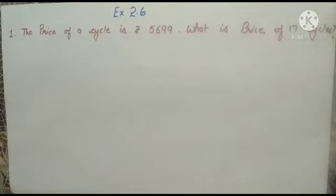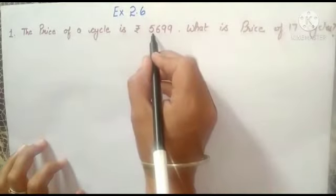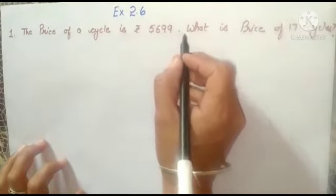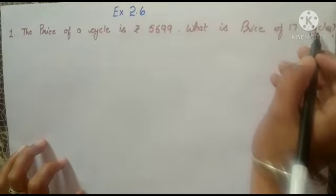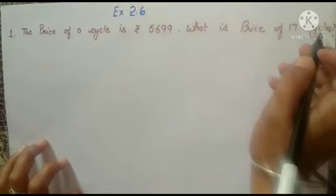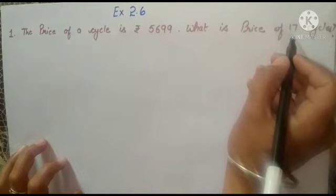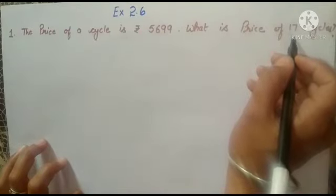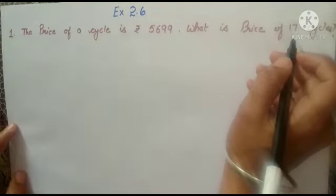The first question is: the price of one cycle is Rs. 5,699. What is the price of 17 cycles? We have to find the price of 17 cycles. So students, if we have the price of one, and we need more, we will always multiply. So in this question we will multiply.